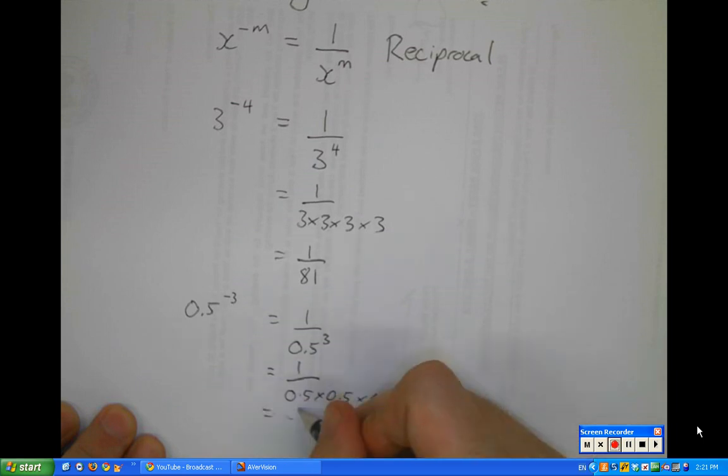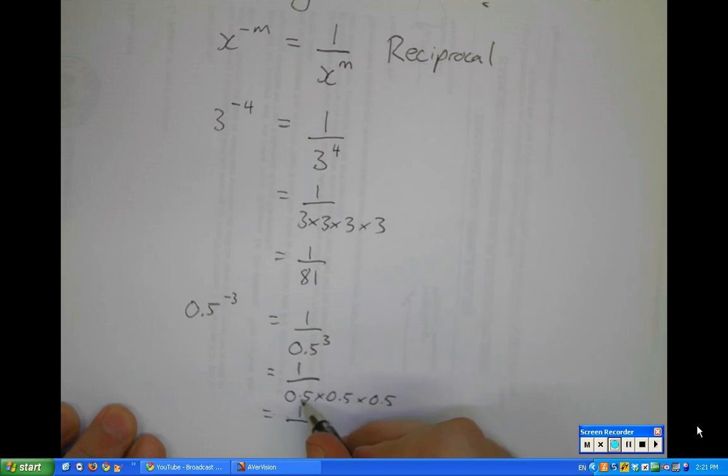which would equal 1 over, help me out here, 0.5 times 0.5 is 0.25, times 0.5 is 0.125, which equals 8.